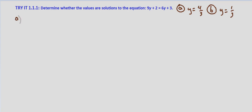So we'll look at a first, y equals four thirds. And we'll substitute that into our equation 9y plus 2 equals 6y plus 3. So 9 times 4 thirds plus 2 equals, and I'm going to put a question mark above this because we're not sure if it's a solution or not, equals 6 times y, which again is 4 thirds plus 3.